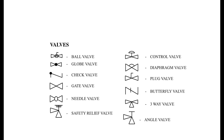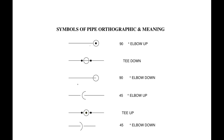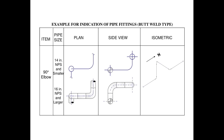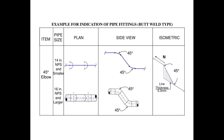Piping and instrumentation diagram (P&ID) is a graphical and schematic representation of the functional relationship between piping, instrumentation, and system equipment components used in the field of automation and instrumentation. They are usually made and used by engineers designing a manufacturing process for a particular physical plant.